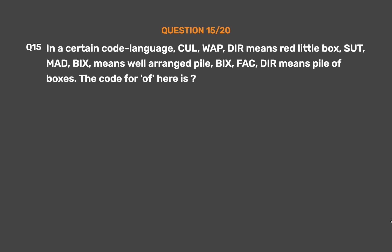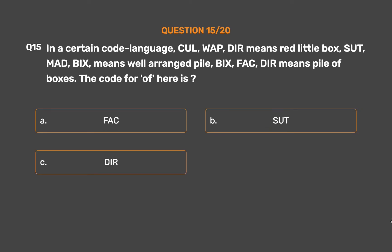Question number 15: In a certain code language, 'cul wap dear' means 'red little box', 'sooth mad bix' means 'well arranged pile', 'bix fag dear' means 'pile of boxes'. The code for 'of' here is: Option A: fag. Option B: sooth. Option C: dear. Option D: bix.